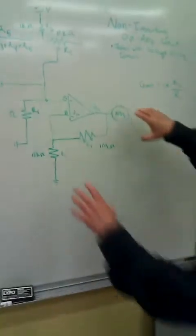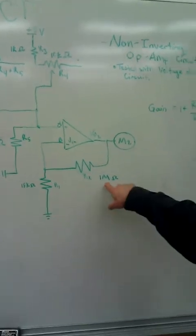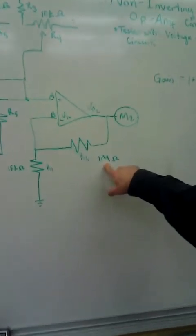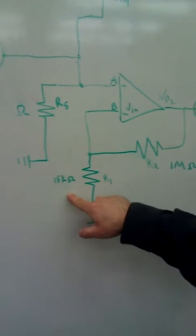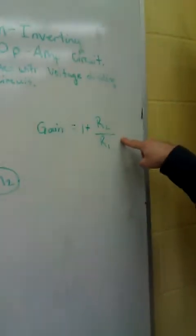Our non-inverting op amp circuit is right here. What we have is a 1 mega ohm resistor, which is our R2, and our R1 is 15k. And the gain is this equation.